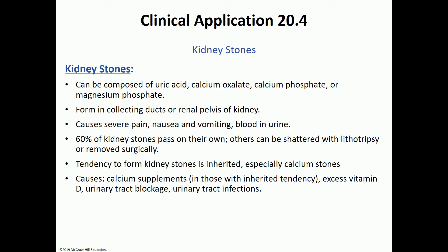Kidney stones start to form in the collecting ducts or in the renal pelvis of the kidney. Some signs and symptoms are pain, severe pain, nausea, vomiting, and the appearance of blood in urine, or hematuria. The presence of blood in urine is an abnormal finding, and one of the red flags it could indicate is the presence of a kidney stone.